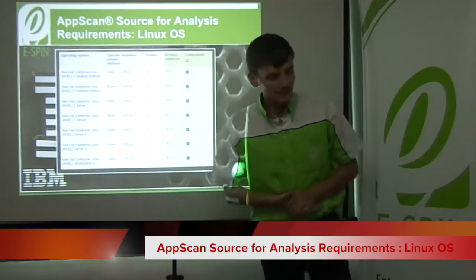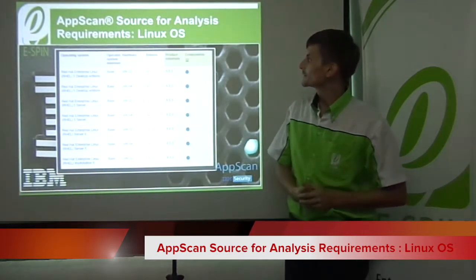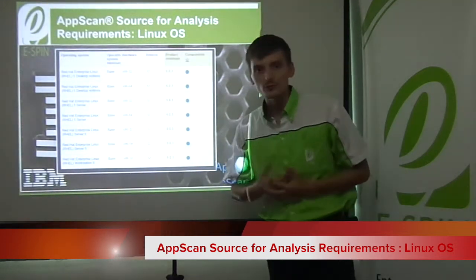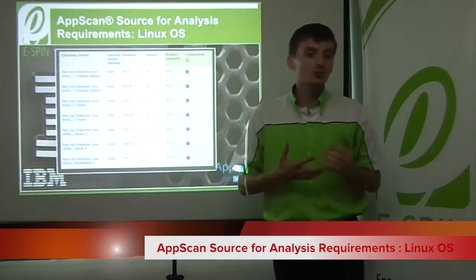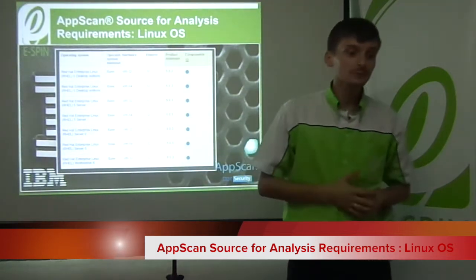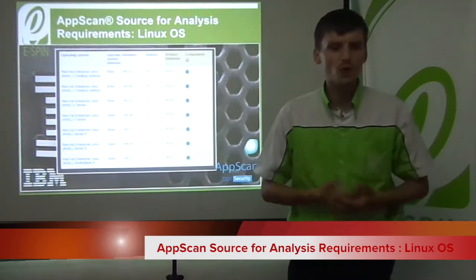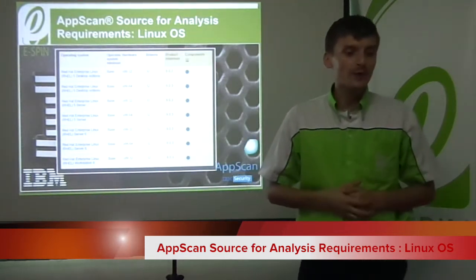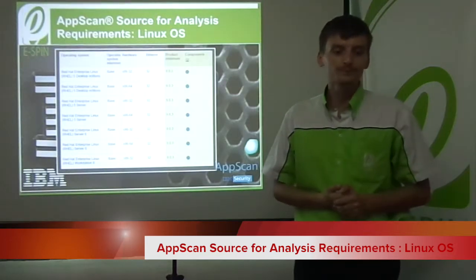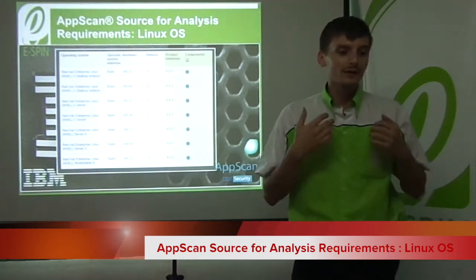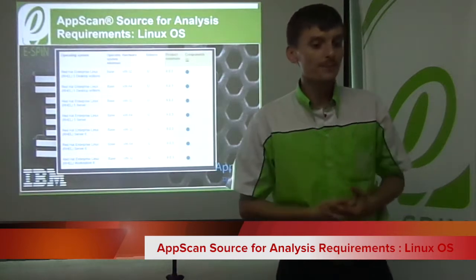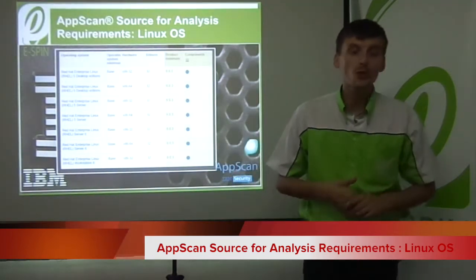AppScan Source for Analysis is a tool for analyzing code and providing specific information about source code vulnerabilities in critical systems. It lets you centrally manage your software risk across multiple applications or your entire portfolio. You can scan source code, identify, and eliminate vulnerabilities before they become a legal or security threat to your organization.